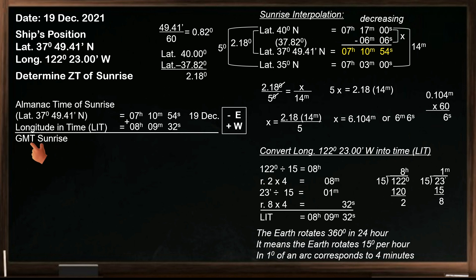The universal time of sunrise is 15 hours 19 minutes and 86 seconds. Since we have only 60 seconds, subtract 60 seconds from 86 seconds. The 60 seconds that has been subtracted, which is equal to 1 minute, must be added to 19 minutes. So the universal time of sunrise is 15 hours 20 minutes and 26 seconds on December 19th.